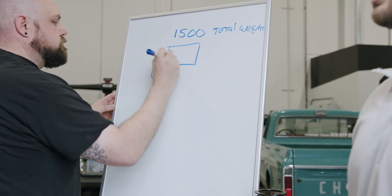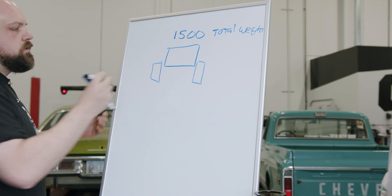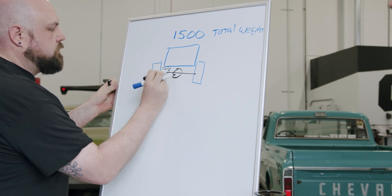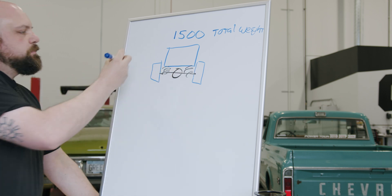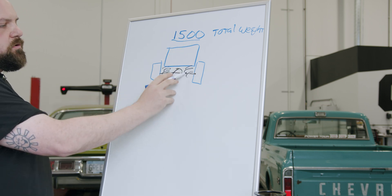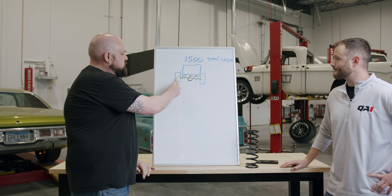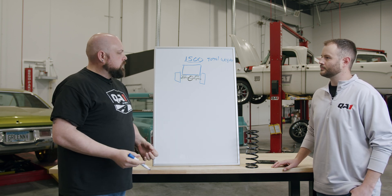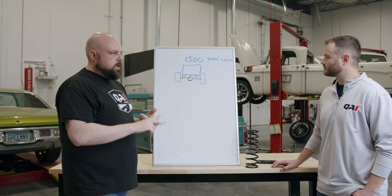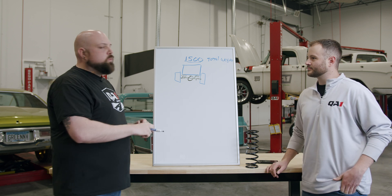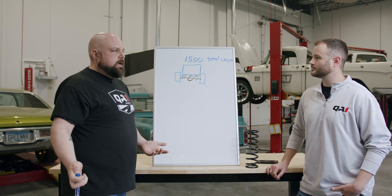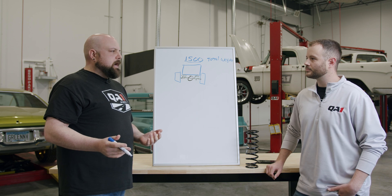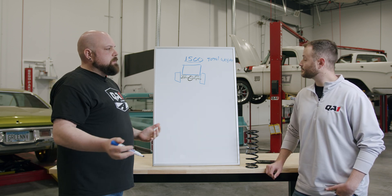That 1500 pounds is your total weight over the rear axle — rear tires parked on some scales. However, these two springs are only supporting the sprung weight. The springs are not holding up the tires, brakes, and axle. So we need to know more specifically what the sprung weight of the vehicle is. You can weigh your wheels, tires, brakes, axles, and diff fluid to get a really accurate answer, but in most cases 250 to 300 pounds is really common for the weight of all that stuff. In this example, we'll assume 300 pounds.